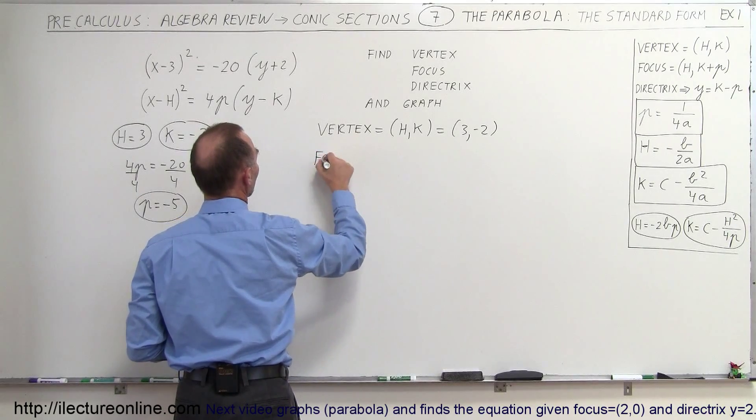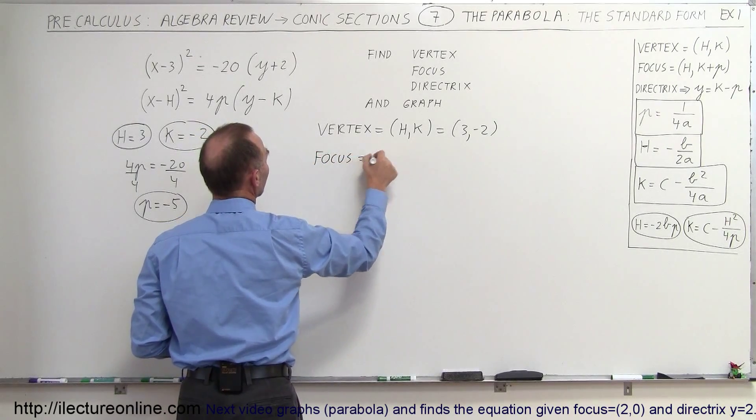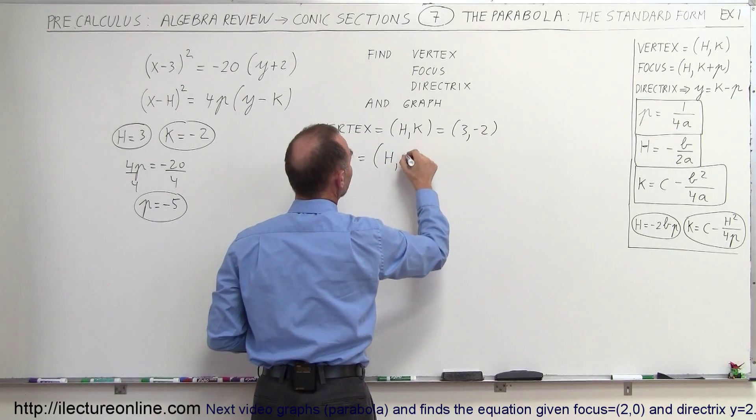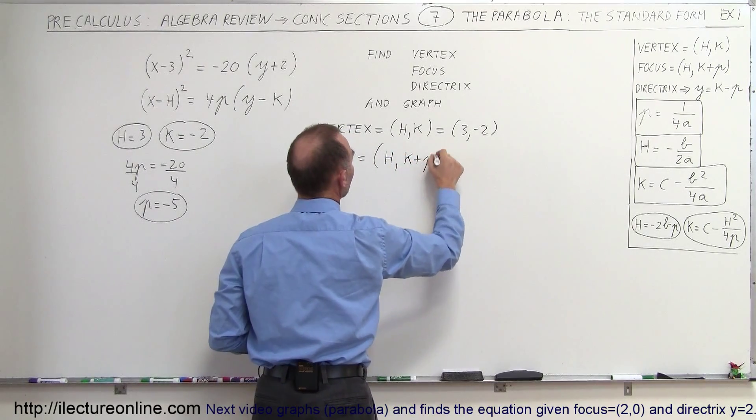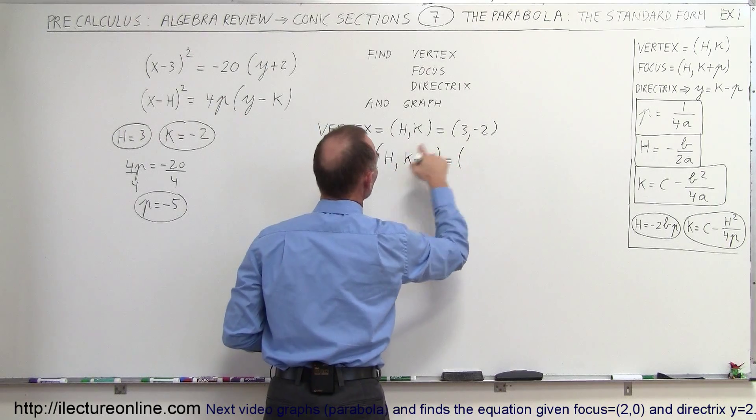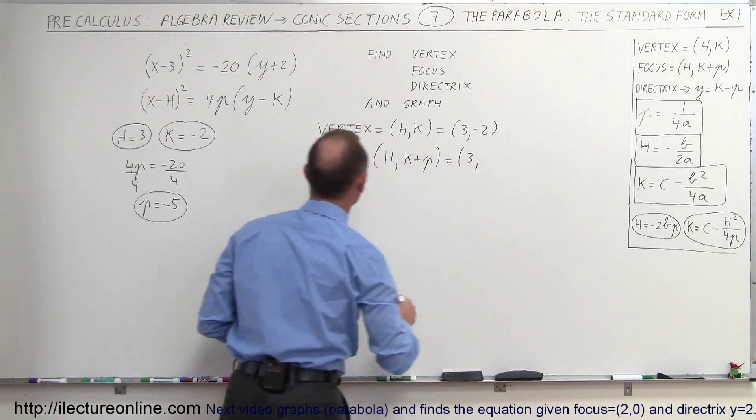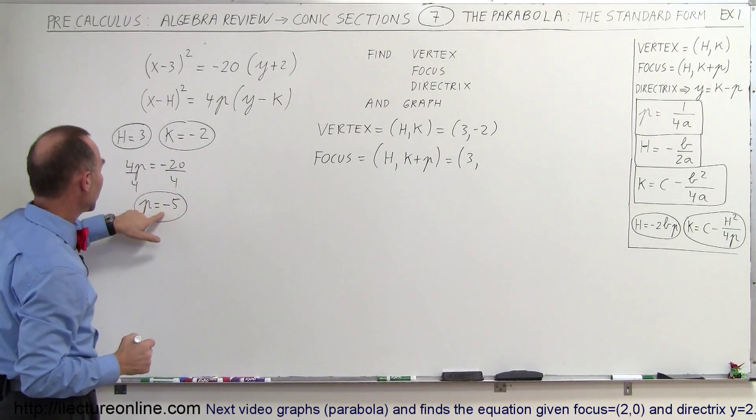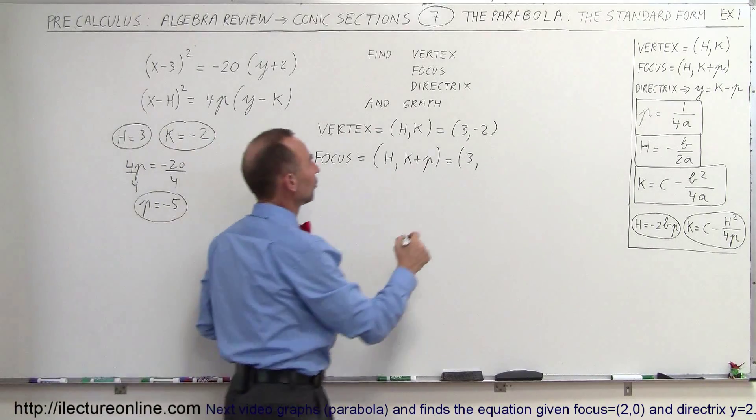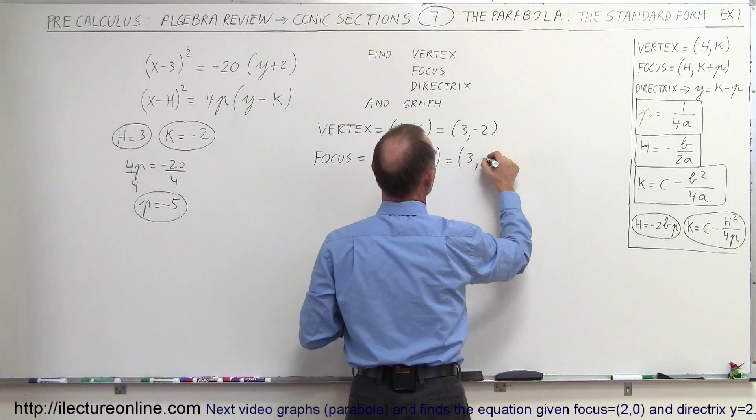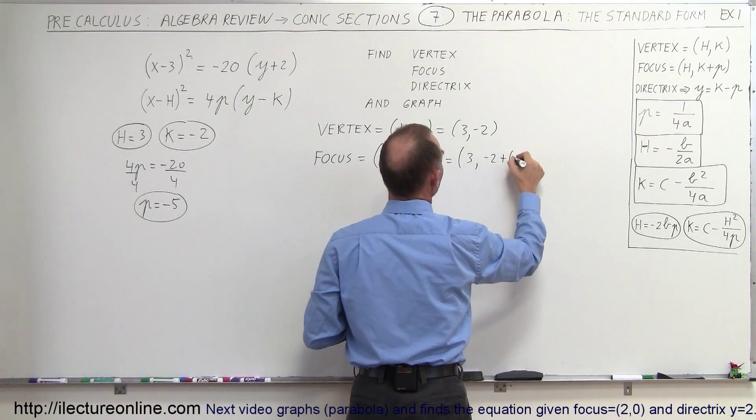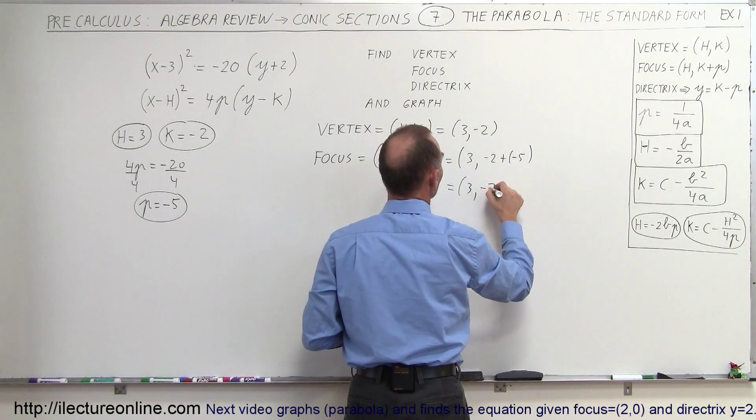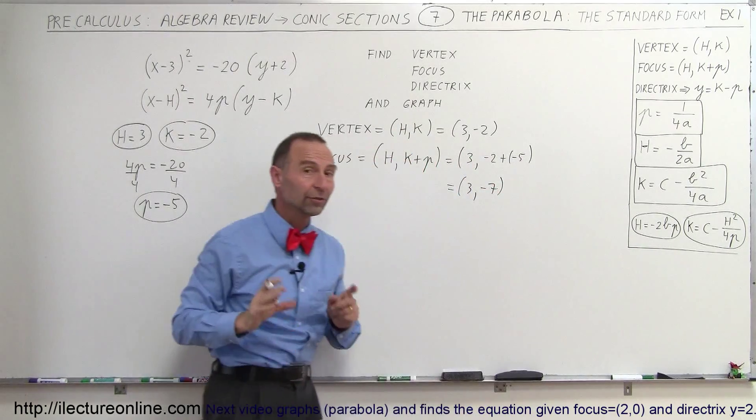Now we want to find the focus. And the focus can be found by taking h as the x-coordinate and k plus p as the y-coordinate. So in this case, h is still 3, just like the vertex, and k is negative 2. So we add to that p, which is negative 5. So we have negative 2 plus a negative 5. And so this can be written as 3, negative 7. So that's the location of the focus.